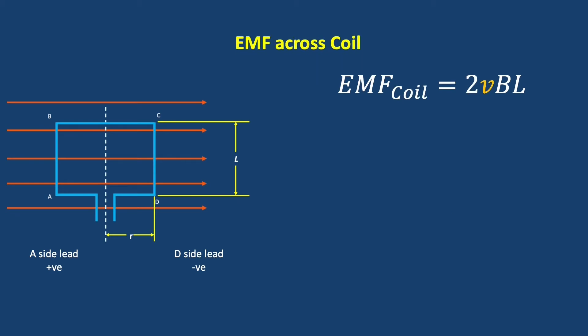The V part of that 2VBL is the speed that segment AB is traveling. It's the speed that segment CD is traveling. Both AB and CD are moving in a circle. The speed that they are moving through that circle is equal to the circumference of the circle they're moving through divided by the period of a single rotation. The circumference of the circle that these sides are moving through is equal to 2πR. The period of rotation is equal to capital T.